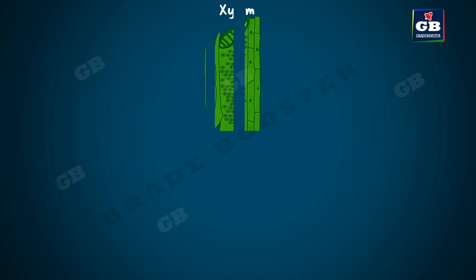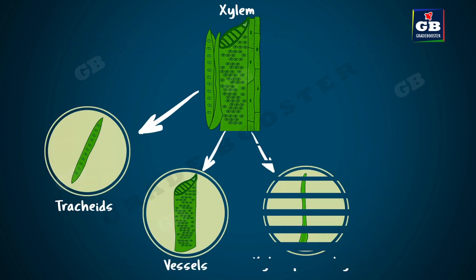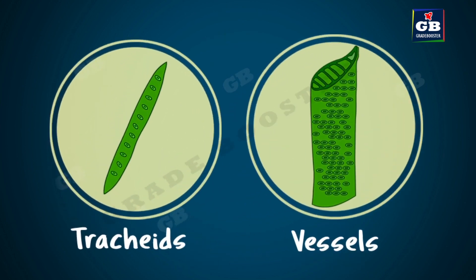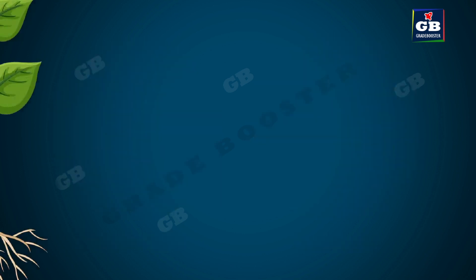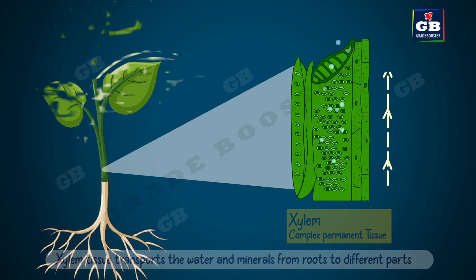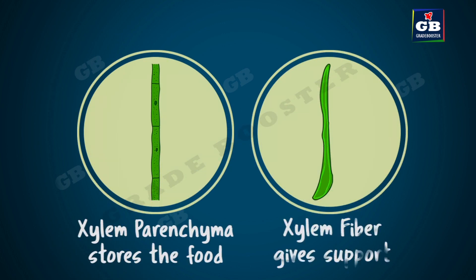Xylem consists of tracheids, vessels, xylem parenchyma, and xylem fibers. Tracheids and vessels are tubular structures with thick cell walls; when these cells mature they become dead cells. Xylem tissue transports water and minerals from roots to different parts of the plant. Xylem parenchyma stores food, and xylem fibers give support to the plant.